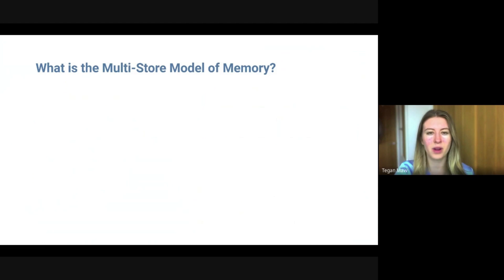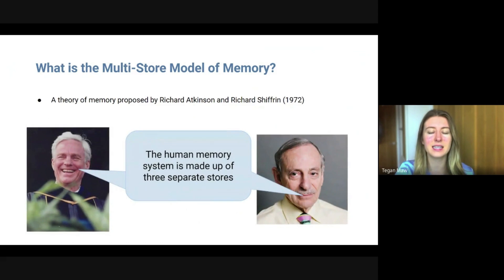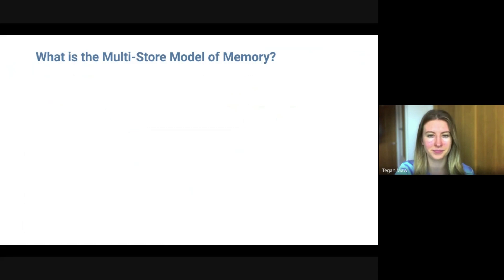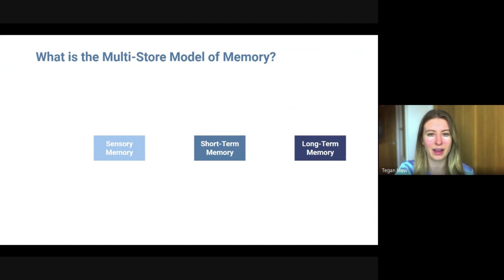What actually is the multi-store model of memory? This is a theory that was proposed by Richard Atkinson and Richard Shiffrin in 1972. They stated that the human memory system is made up of three separate stores: the sensory memory store, short-term memory store, and a long-term memory store. Information has to be able to pass into and out of each store.